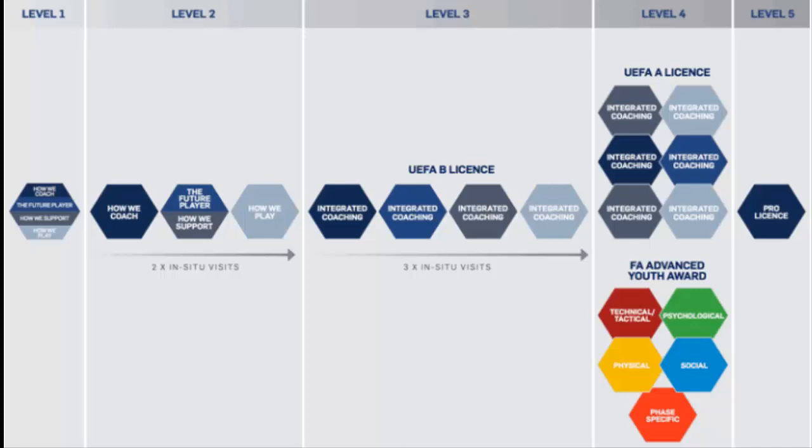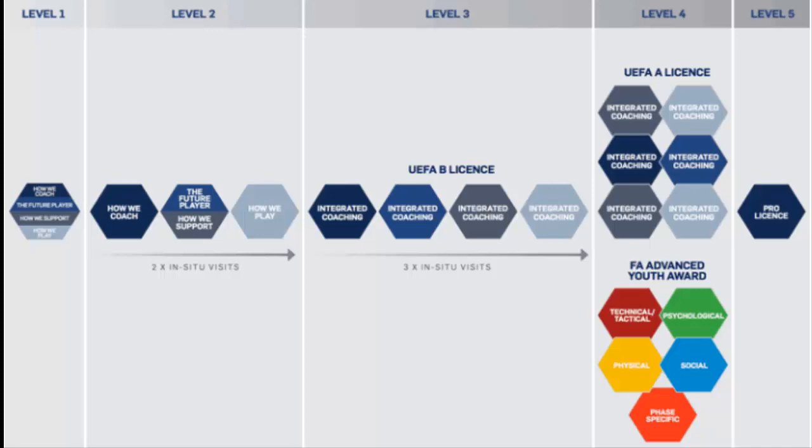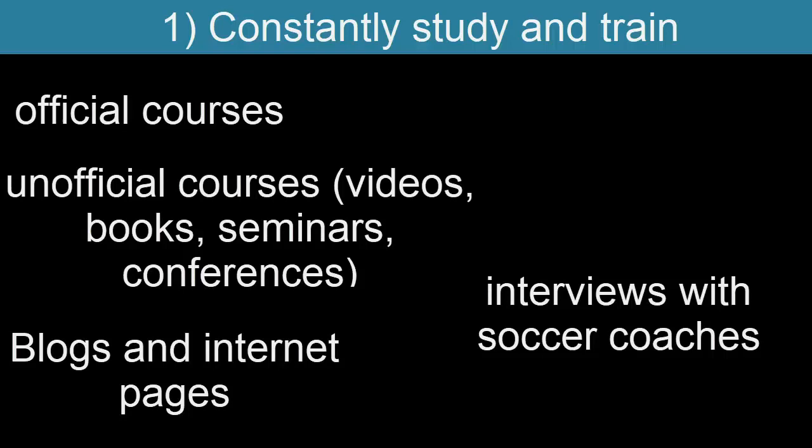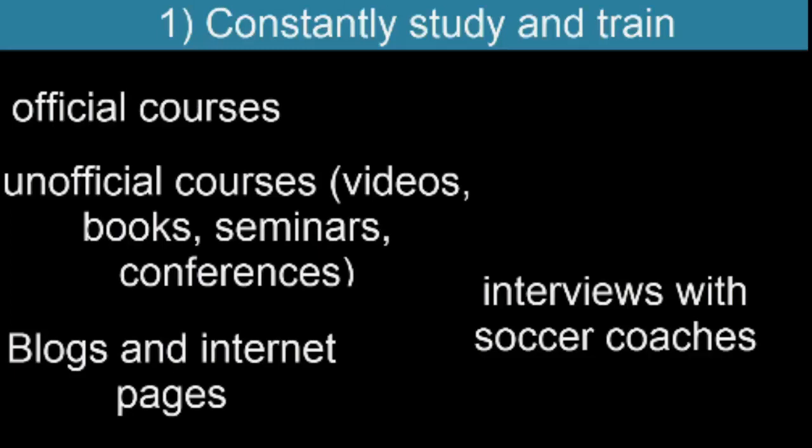Train and study constantly. It can be done officially, as seen in the graphic in England where the course is divided into five levels. Similarly, there are other ways of training such as unofficial courses, or training for example with videos, conferences, seminars, books, interviews with coaches, or observing training.